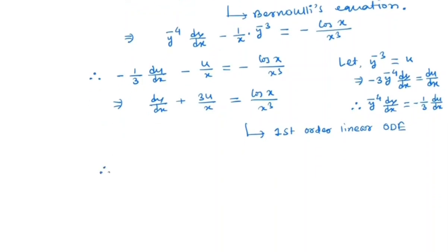So here integrating factor I(x) will be e to the power integral of coefficient of u which is 3 by x dx, which is nothing but e power 3 ln x, which is same as e power ln x cubed, which is same as x cubed.